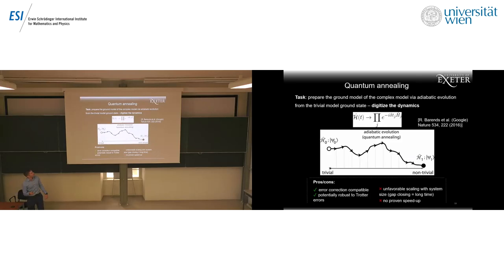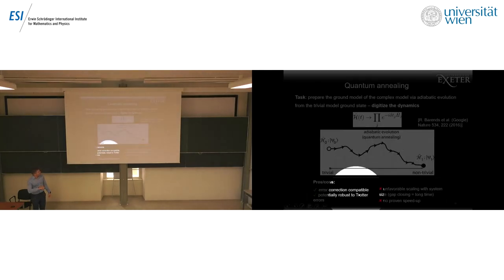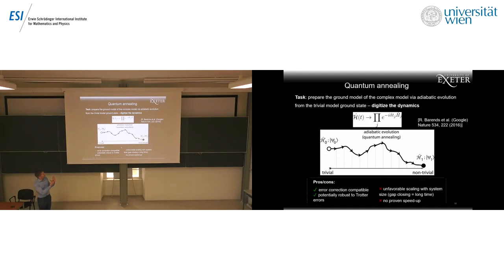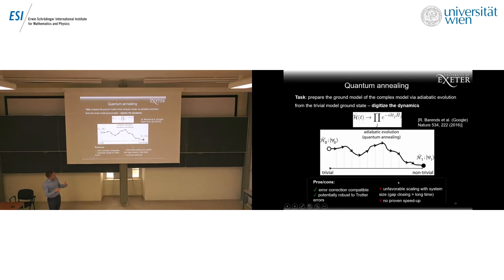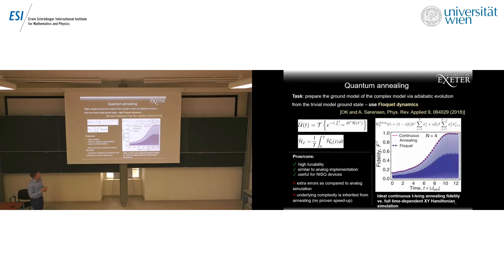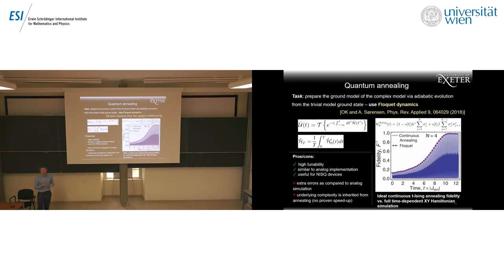We can also do a digital version of annealing — for instance, making it error-correction compatible by Trotterizing the evolution. But the unfavorable scaling with gap size persists, and there is no proven speedup. One improvement I've been working on is doing annealing and ground state preparation with Floquet simulation: instead of implementing the Hamiltonian in the analog way, we add a fast drive which changes the form of the Hamiltonian and allows annealing to the ground state. However, in the end it still relies on annealing.